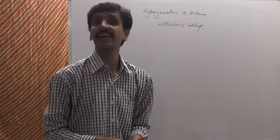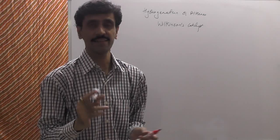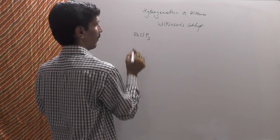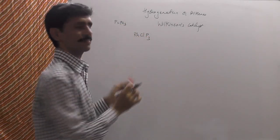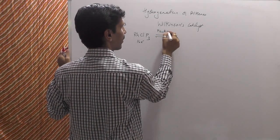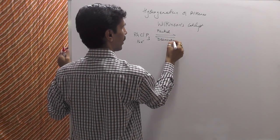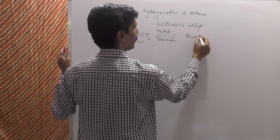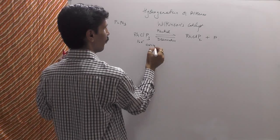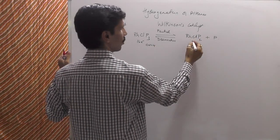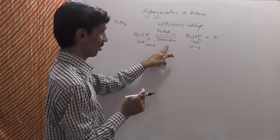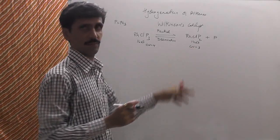We write down Wilkinson's catalyst where P is PPh₃. It is a 16-electron complex. It undergoes a reversible partial dissociation — that means all bonds are not broken, only one ligand leaves, giving RhClP₂ plus P. So from coordination number four, we go to coordination number three. One ligand is out, so two electrons are lost. The 16-electron catalyst undergoes partial dissociation to give a 14-electron catalyst with coordination number three.